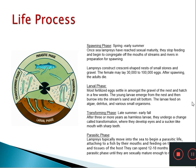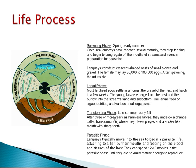Fertilized eggs settle in gravel and hatch within a few weeks. Young larvae emerge and burrow into stream sand and silt, feeding on algae, detritus and small organisms — not ectoparasitic at this stage. After three or more years as harmless larvae, they undergo a transformation developing eyes and a sucker-like mouth with sharp teeth, then migrate to the sea to begin a parasitic life, attaching to fish and feeding on blood and tissues.